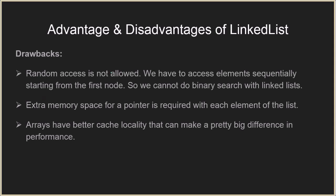Now let's look at the drawbacks of linked lists. The biggest drawback is that random access is not allowed. If you want to access the fifth element in a linked list, you have to start from the head pointer and traverse from the first to the second to the third to the fourth to the fifth element. In contrast, with arrays you can directly access the fifth element. Because random access is not allowed, you also cannot perform binary search, since binary search requires the ability to randomly access the middle element.